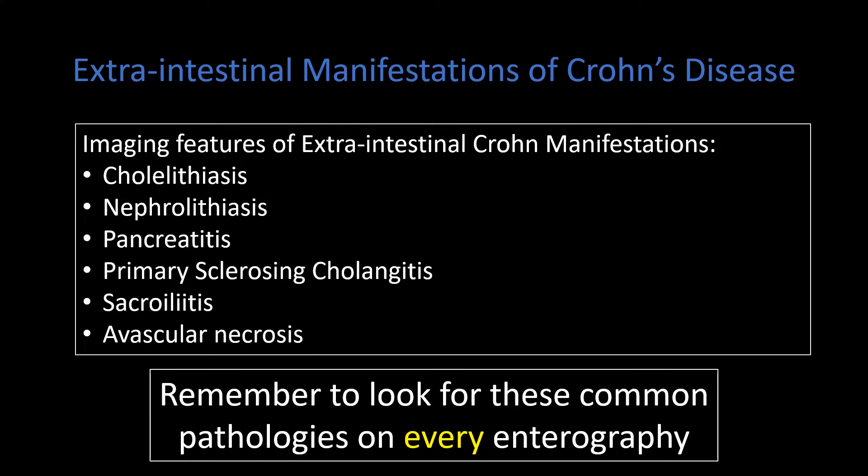Oftentimes when we have a complex CTE or complex MRE — with penetrating disease, multiple segments of active inflammation, or perianal fistula — we get very wrapped up in providing a detailed description of the intestinal manifestations of Crohn disease and may forget to look for these extra-intestinal manifestations.